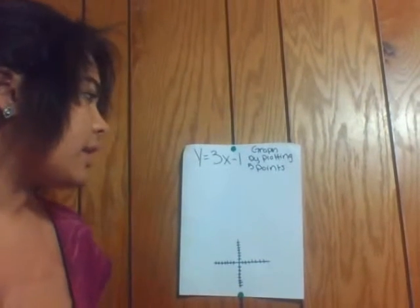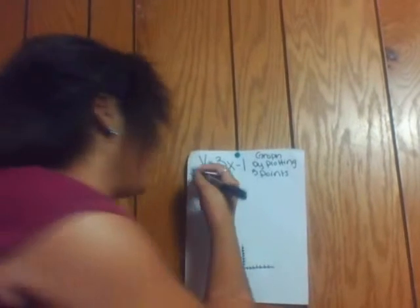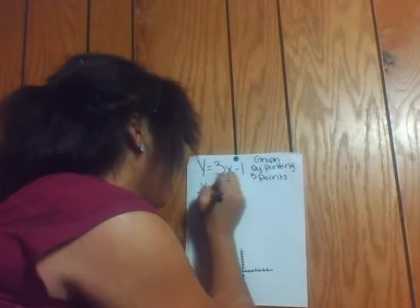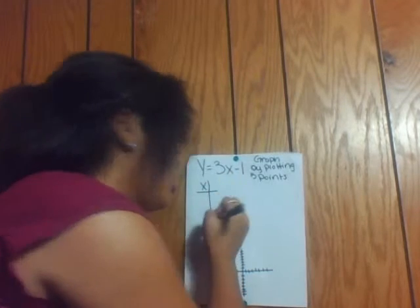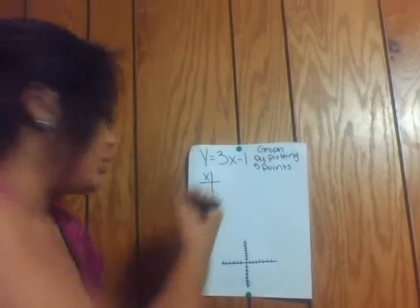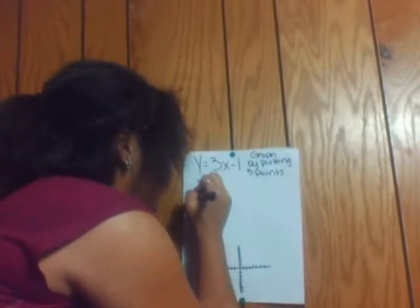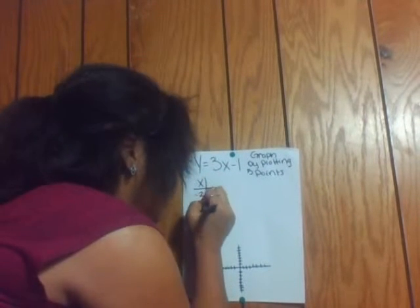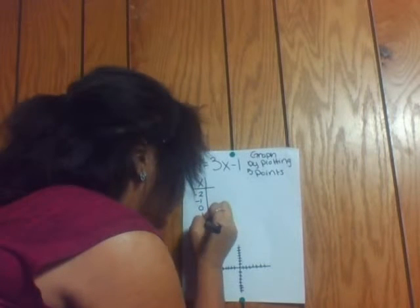Okay, first you're going to make a table, starting with x, and then pick 5 easy points to use. So you're going to use negative 2, negative 1, 0, 1, and 2.